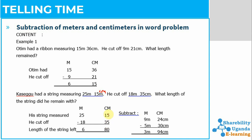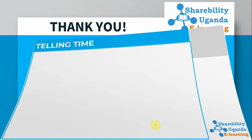When we say five minus five, we get zero. Then one minus three is impossible, so we borrow from the twenty-five meters — it becomes twenty-four. After borrowing one, this becomes eleven. Eleven minus three gives eight for the centimeters column. Then twenty-four minus eighteen gives six for the meters. So the answer is six meters and eight centimeters.